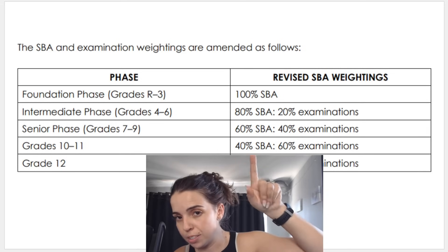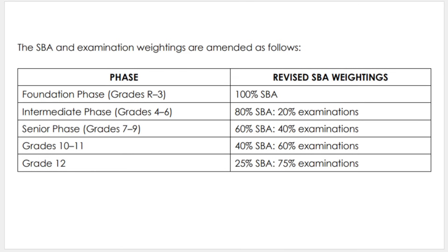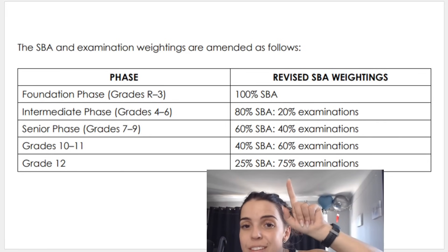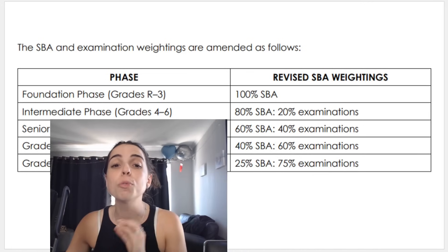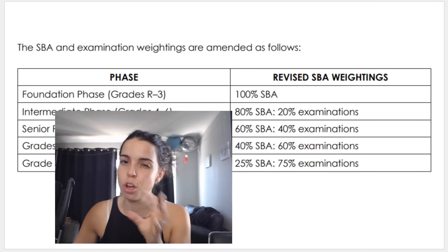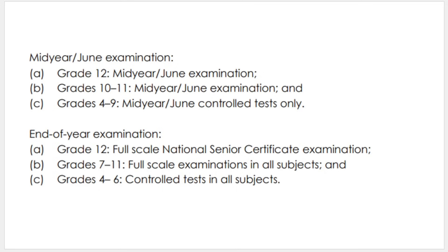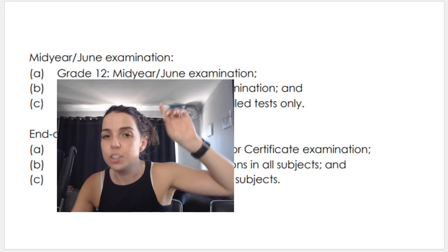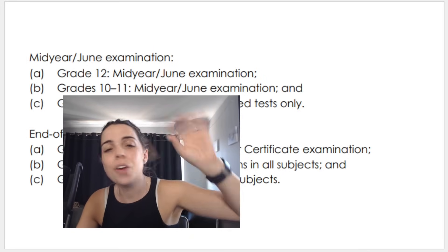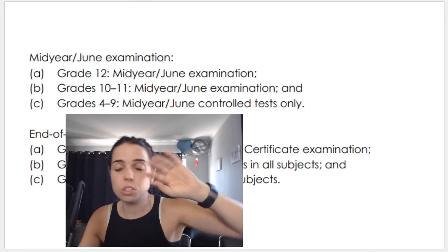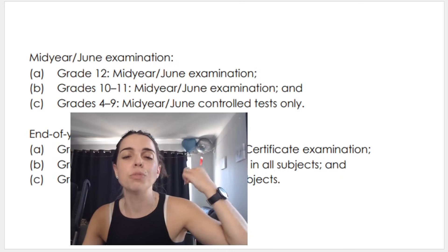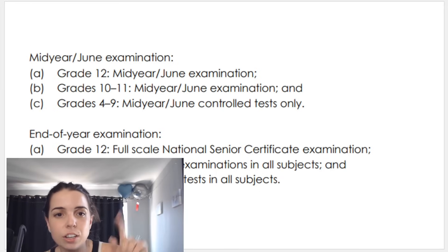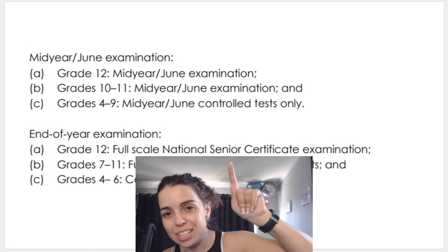In grade 12, it's a big one: 25% comes from your SBA — including your prelim marks — and 75%, three quarters, comes from your final matric exams written in October/November. In grade 12 you always have a proper June mid-year exam; in grade 10 and 11 you also have June exams; and from grade four to nine, some schools call them exams but they're more like control tests — still very important. From grade four to grade 12, at the end of the year, grade 12 writes the full-scale National Senior Certificate exams.